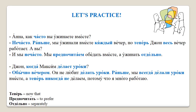Now let's see how we can use all of this new material in conversation. First dialogue — Анна, как часто вы ужинаете вместе? Не часто. Раньше мы ужинали вместе каждый вечер, но теперь Джон весь вечер работает. А вы? И мы не часто. Мы предпочитаем обедать вместе, а ужинать отдельно. Translation: 'Anna, how often do you have dinner together?' 'Not often. Before, we used to have dinner together every evening, but now John works the whole evening.' 'And you?' 'Us too — we prefer to have lunch together and to have dinner separately.'